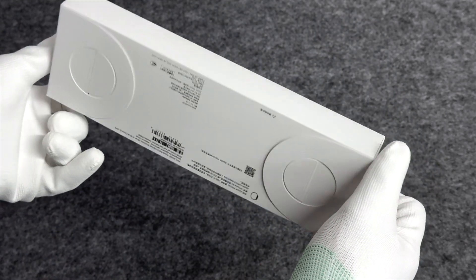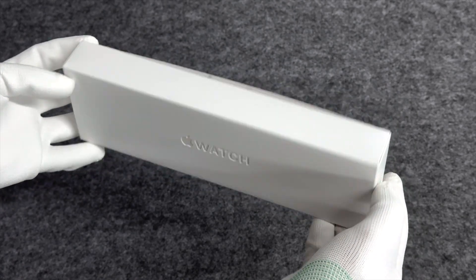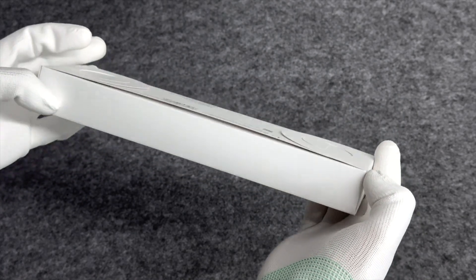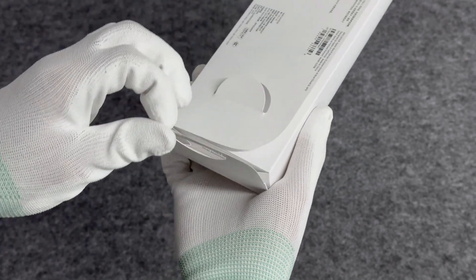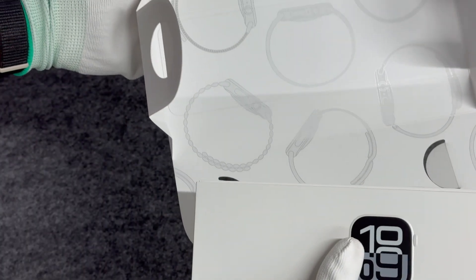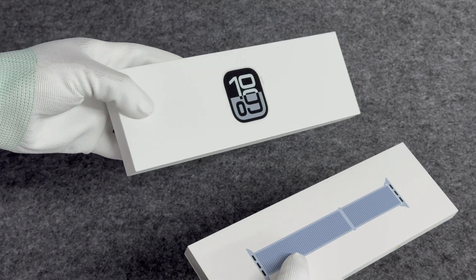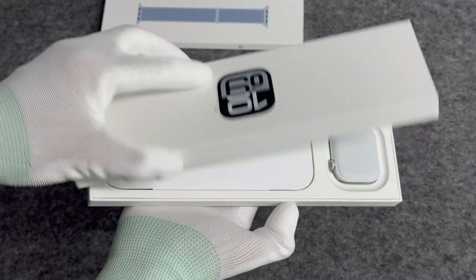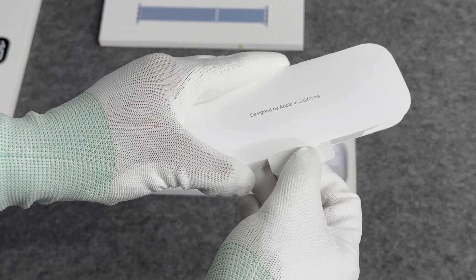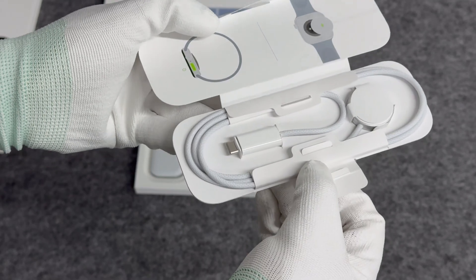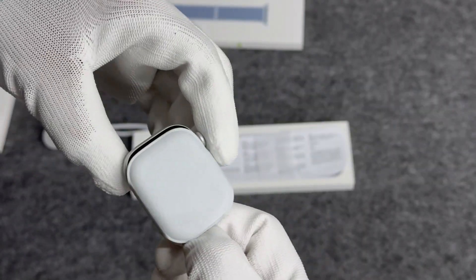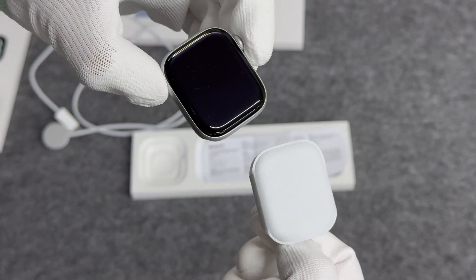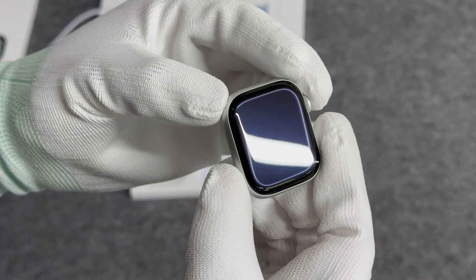In terms of battery capacity, the 42mm version of Series 10 is 290mAh, and the 45mm version is 327mAh, which is much smaller than the 564mAh of Ultra 2. Compared with the previous generation S9 and earlier S8, the 42mm version has a slightly larger battery, and the 46mm version has a slightly smaller battery.